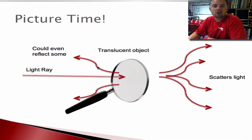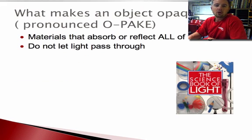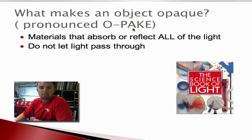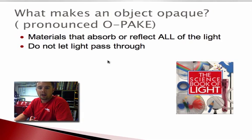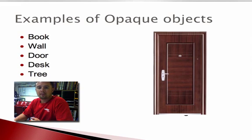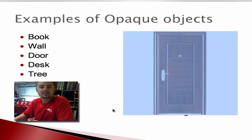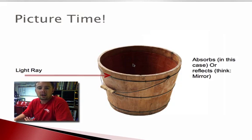A translucent object has some properties of transparent, but also some properties of the last type we'll look at: opaque — pronounced O-PAKE. An opaque object absorbs or reflects all of the light and does not let any light pass through it at all. Examples of opaque objects include a book, a wall, a door, a desk, and a tree. With this bucket, the light ray hits the object and all the light is absorbed. If we replaced the bucket with a mirror, that light ray would bounce off instead.